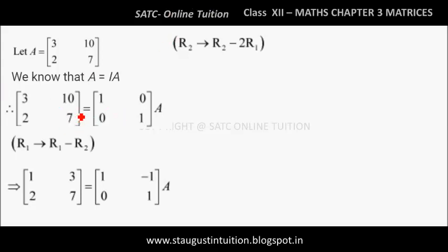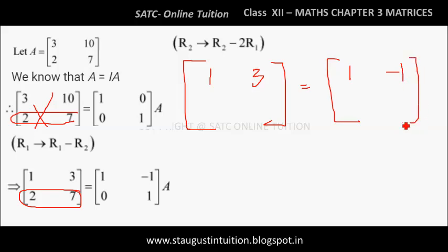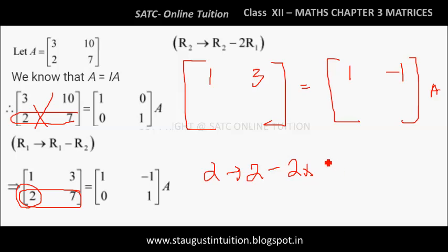We take R2. This is R2. We change R1 values: 1 and 3. R2 equals R2 minus 2 into R1. Now I will change R2: here this is 1 minus R2, that is 2 minus 2 into R1.